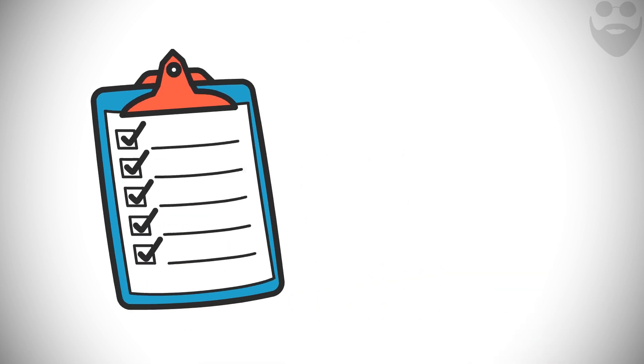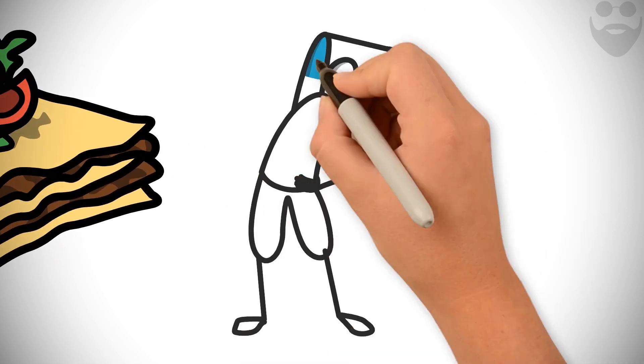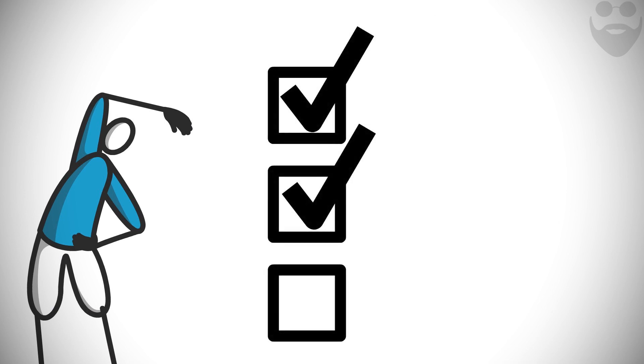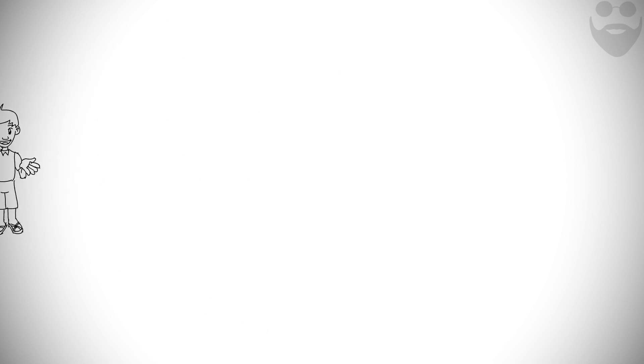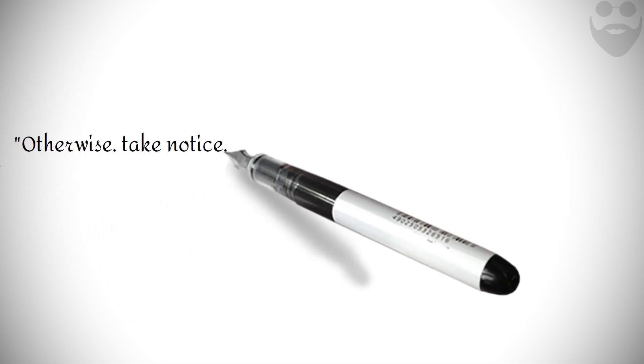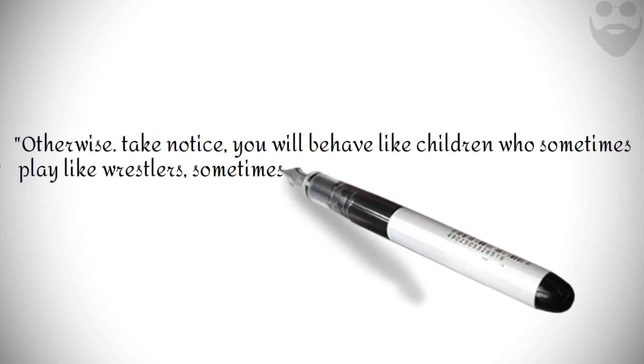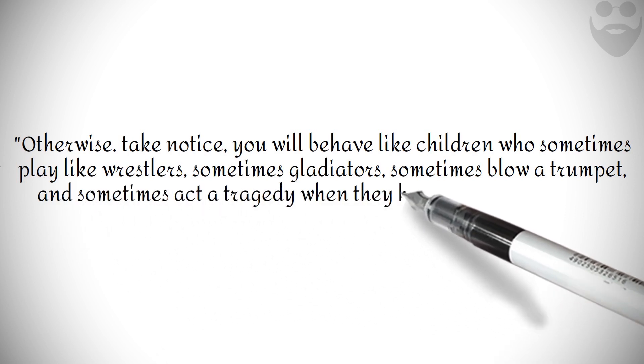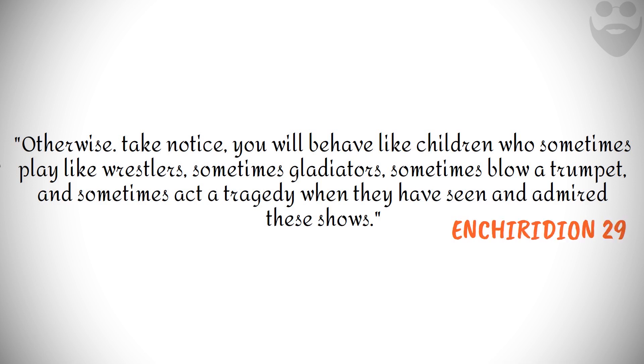You must conform to rules, submit to a diet, refrain from dainties, exercise your body. When you have evaluated all this, if your inclination still holds, then go to war. Otherwise, take notice. You'll behave like children who sometimes play like wrestlers, sometimes gladiators, sometimes blow a trumpet, and sometimes act a tragedy when they have seen and admired these shows. Enchiridion 29.